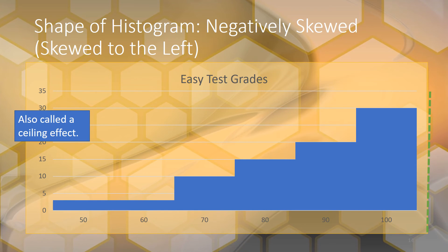A negatively skewed histogram is also called a ceiling effect. There's a line representing the ceiling — the numbers can't go above 100 because you can't score higher than 100 on a test (unless there's extra credit). There's going to be some kind of ceiling to the grade you can get.